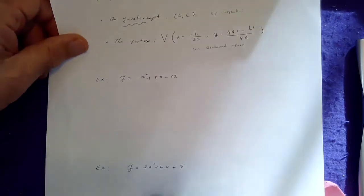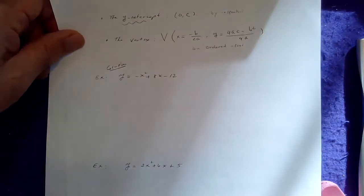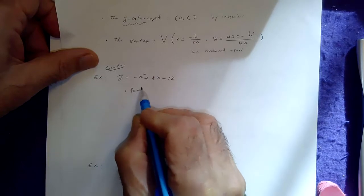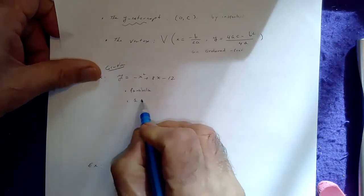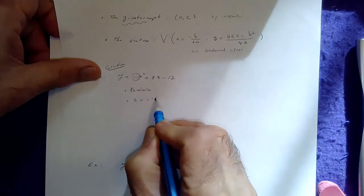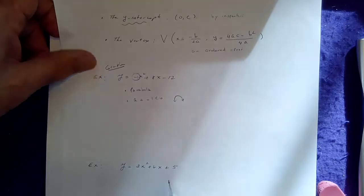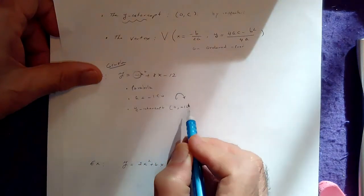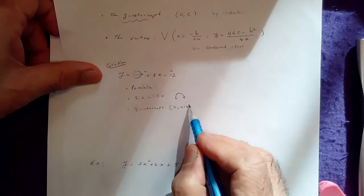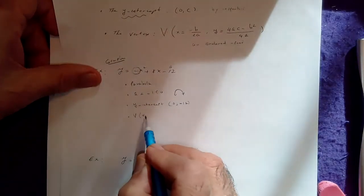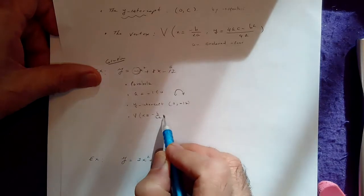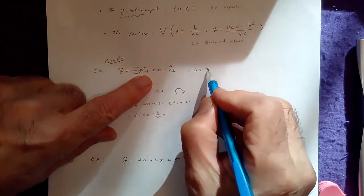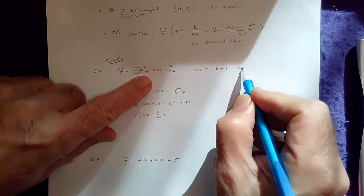Suppose you are asked to graph y equals negative x squared plus 8x minus 12. To begin with, the graph is a parabola — not a line. The leading coefficient is negative 1, which is less than 0, so the parabola opens downwards. The y-intercept by inspection is (0, negative 12) — that's your c value. For the vertex, x equals negative b over 2a, so here a = negative 1, b = 8, and c = negative 12.